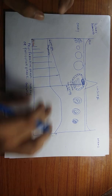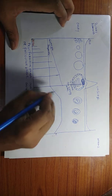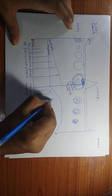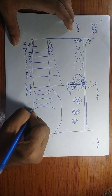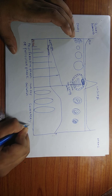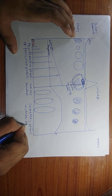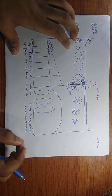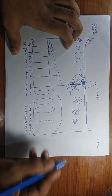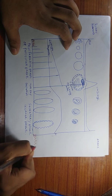As progesterone rises, the endometrium transitions from proliferative to secretory — the glands become larger, fill with fluid, and become capable of providing nutrition. This is called the secretory phase, also known as the luteal phase. When the corpus luteum dies, progesterone falls, the endometrium shrinks and falls off, and menstruation begins again.